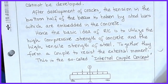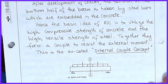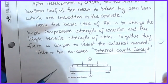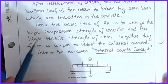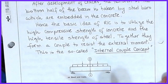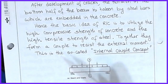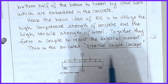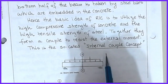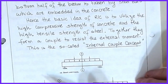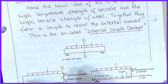The basic premise of reinforced concrete design is that we want to utilize the high compressive strength of concrete and the very high tensile strength of steel, and together we can put them together to resist an external moment. That's what we call the internal couple concept. We'll be doing something called a Whitney stress block, which helps us draw the picture for this internal couple. With that, the design and analysis of concrete beams becomes very simple and very straightforward.